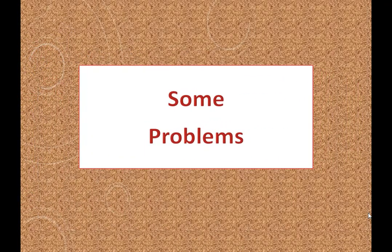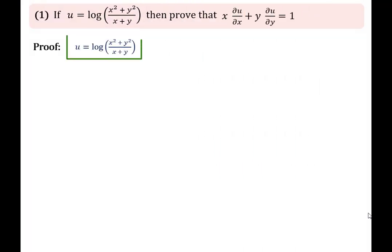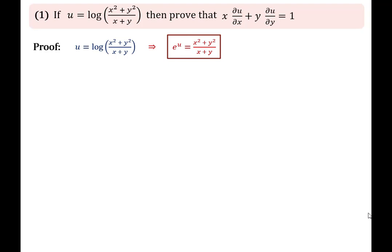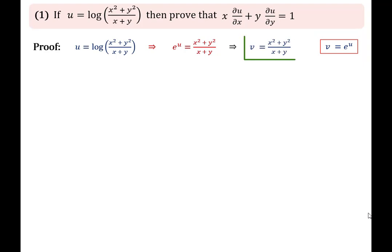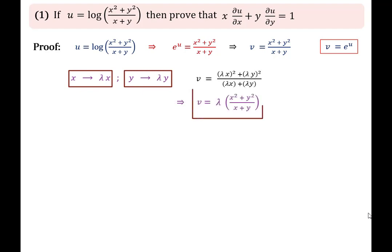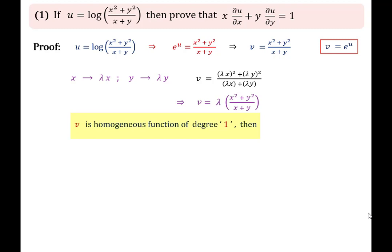Now we will discuss some problems. First problem: U = log[(X² + Y²)/(X + Y)]. This function is not homogeneous because we cannot convert U into any one of the three forms discussed. To make it homogeneous, we write e^U = (X² + Y²)/(X + Y). Let V = e^U, so V = (X² + Y²)/(X + Y). Replacing X by λX and Y by λY, we get V = λ(X² + Y²)/(X + Y), which is a homogeneous function of degree 1.